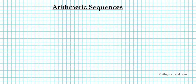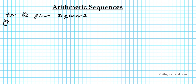Good day students. We're going to be going over an example on arithmetic sequences. For the given sequence, we're going to do the following: part A, classify it as arithmetic or geometric.